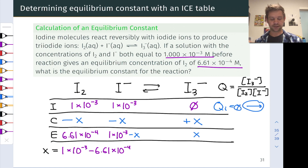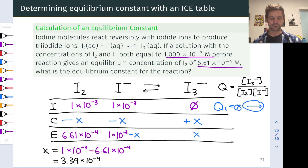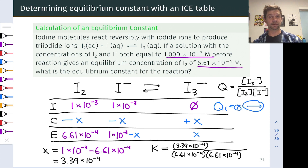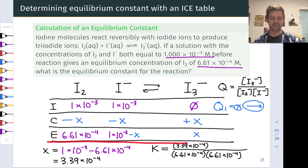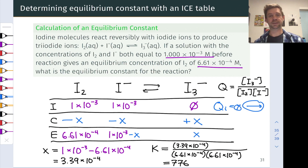1 × 10⁻³ minus 6.61 × 10⁻⁴ gives x = 3.39 × 10⁻⁴. So now we know x, can plug it into the equilibrium line to get numbers for the I⁻ molarity and the I₃⁻ molarity, and then plug those into the equilibrium equation. We set Q equal to K because we know that ratio equals K when the system is at equilibrium. Plugging in: 3.39 × 10⁻⁴ for I₃⁻, 6.61 × 10⁻⁴ for I₂, and that same value for I⁻. The result is K = 776.